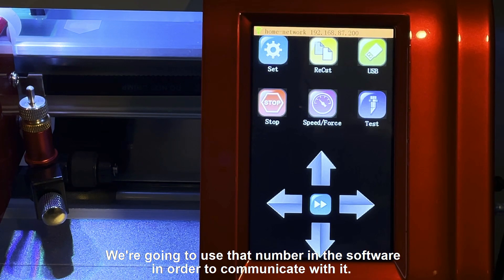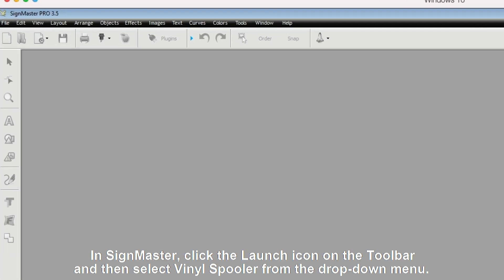We're going to use that number in the software in order to communicate with it. In SineMaster, click the Launch icon on the toolbar, and then select Vinyl Spooler from the drop-down menu.